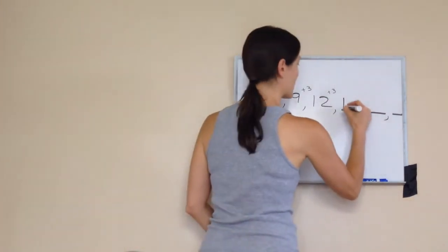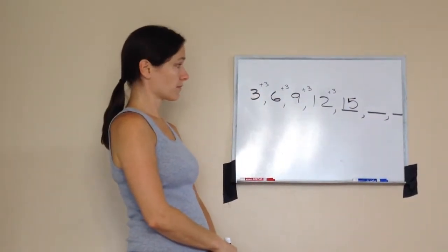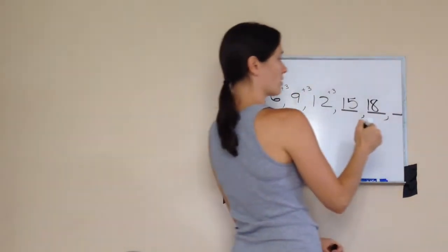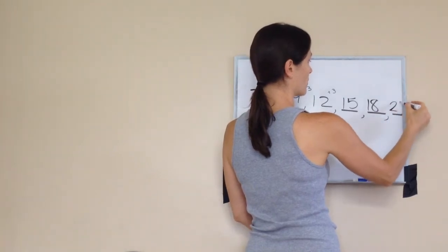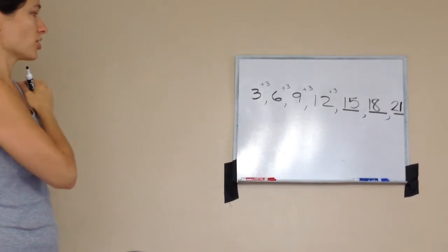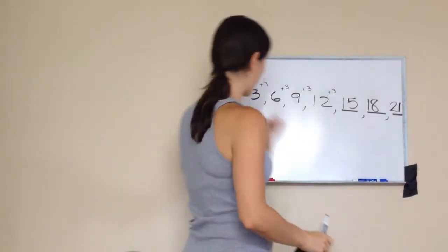15, excellent. And the next one? 18, very good. And the next one? 22, almost. 21, excellent. Okay, so you get it, feel like you understand it? So these are sequences and the rule that it's doing is plus three. You got it.